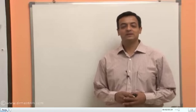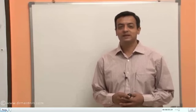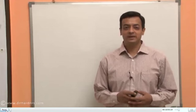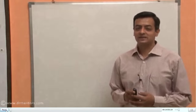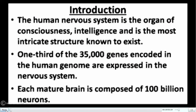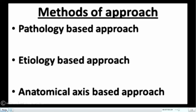Hello and good morning, welcome to this class on the most important system — the central nervous system. We'll be talking in detail about the CNS today. The human nervous system is an organ of consciousness and intelligence, and the most intricate structure known to exist. One third of the 35,000 genes encoded in the human genome are expressed in the nervous system. Each mature brain is composed of a hundred billion neurons and miles of axons and nerve fibers.